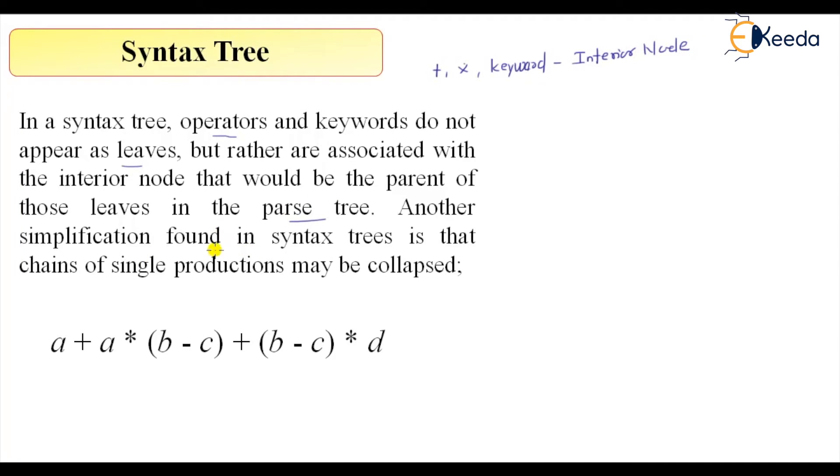Now another simplification found in the syntax tree is that the chain of single production may be collapsed. For example, in parse tree we have E derive T, T derive F, F derive ID. Now we can collapse this entire chain of single production.